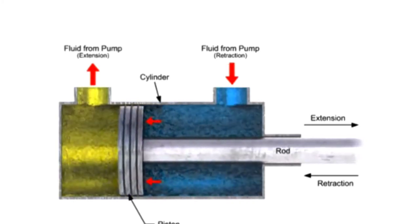In the case of this double-acting cylinder, the pressure from the fluid acts on the area of the piston. The resultant force causes the piston to move.